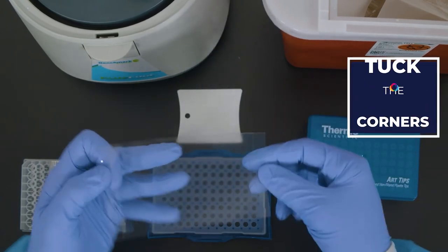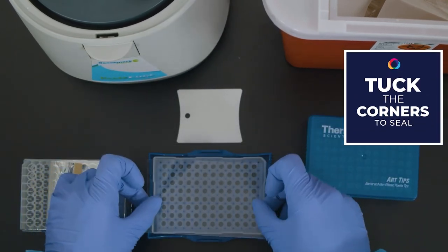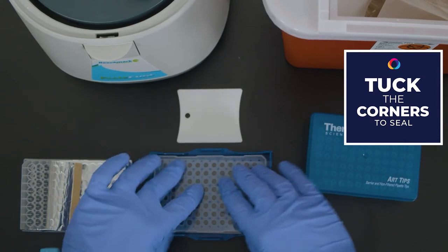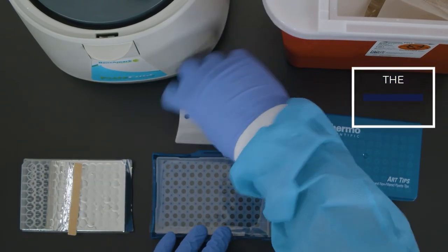Seal the plate. To seal the plate, use the applicator in a back and forth direction, tucking in the corner edges and creating an inner seal around the perimeter of the wells.